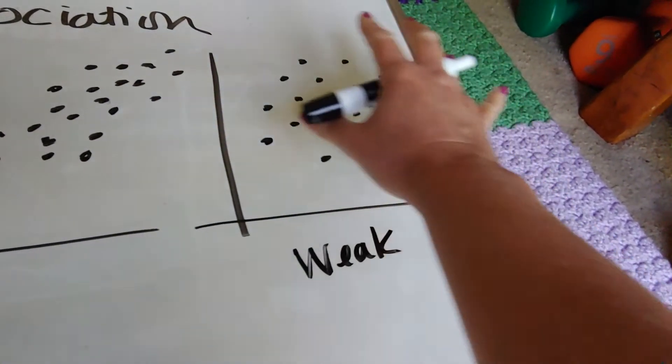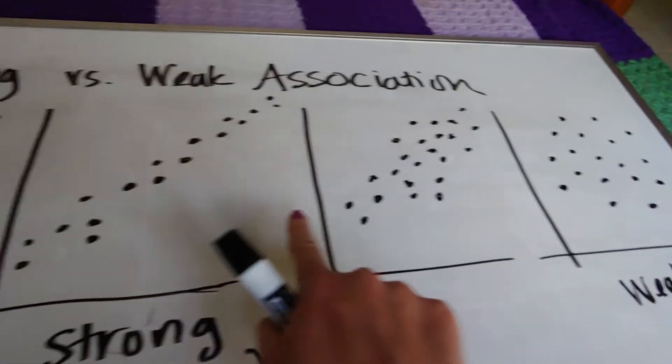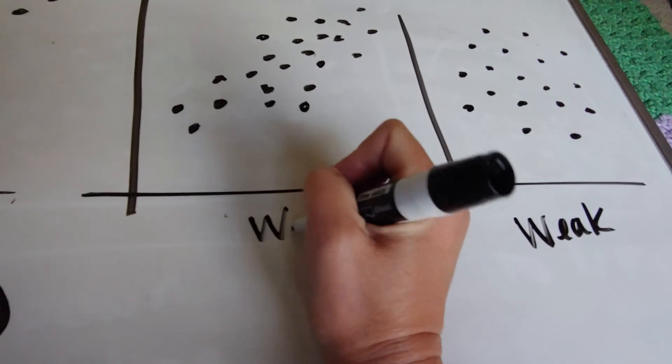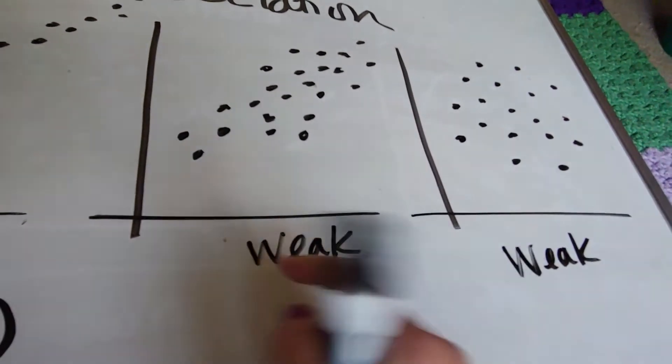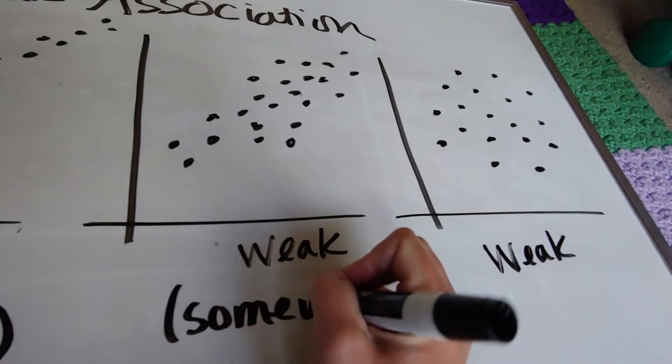This is definitely not looking like a line. This in comparison looks more line-ish, but definitely not as strong as these. So here we would call this weak, and it could just be weak or you could say somewhat weak.